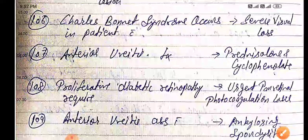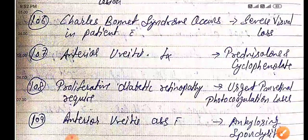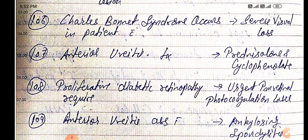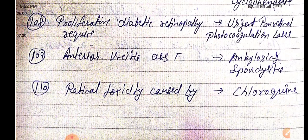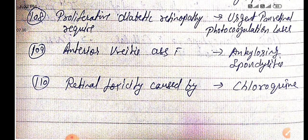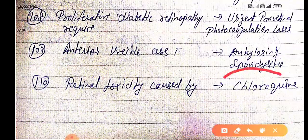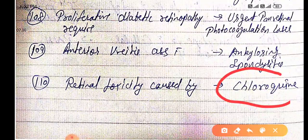Anterior uveitis is mainly associated with ankylosing spondylitis. Retinal toxicity is caused by chloroquine.